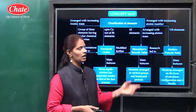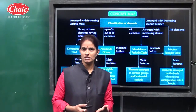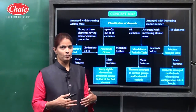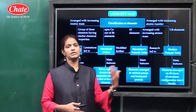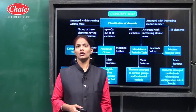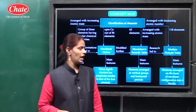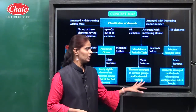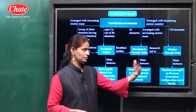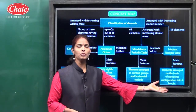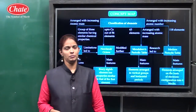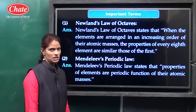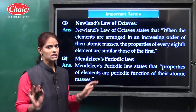Then he again arranged this periodic table into a new form — that is 18 vertical columns and 7 horizontal rows. And the limitations that existed in the earlier study were removed in this new modern periodic table. So this is the concept from this chapter.